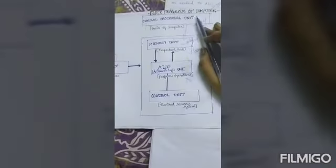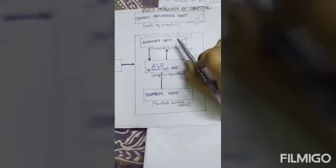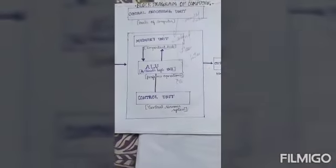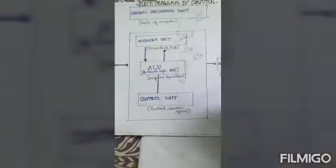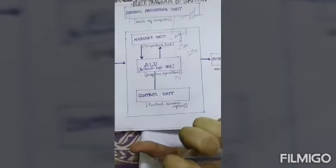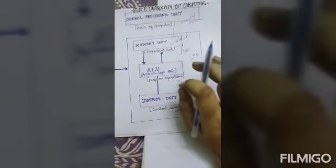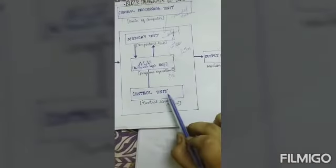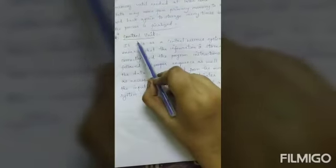The user gave particular data or information with the help of input devices. It moved to the central processing unit, which reads and executes - that's why it's called the brain of the computer. It goes into the memory unit and is stored there permanently. All the data and information are stored permanently in the memory unit, and it moves to the ALU - Arithmetic Logic Unit - where arithmetic and logical operations are performed. Until the process is finalized, it goes back and comes again and again. Once finalized, it moves to the control unit, the central nervous system.